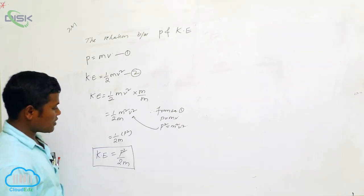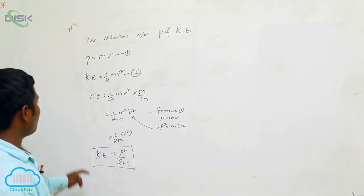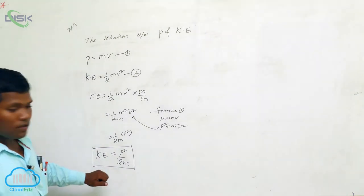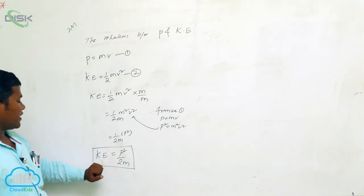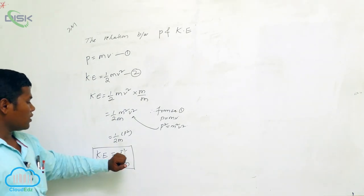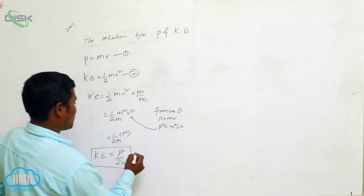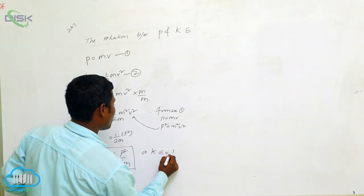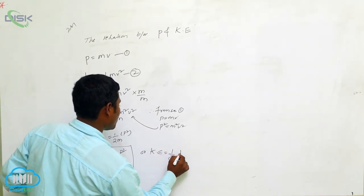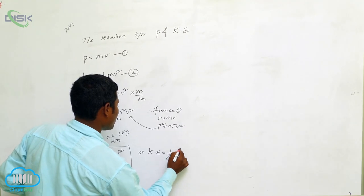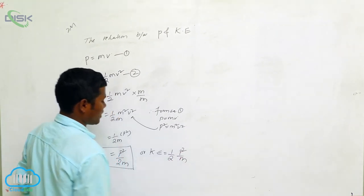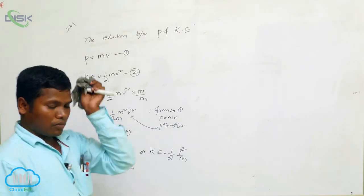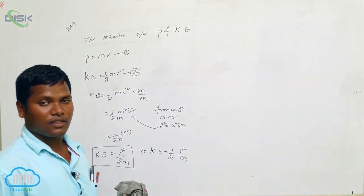This is known as the relation between momentum and kinetic energy. KE equals P squared by 2M. Or we can also write KE equals one-half times P squared by M. Both are the same. This is the relation between momentum and kinetic energy.